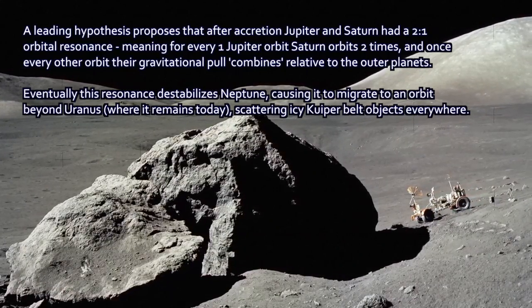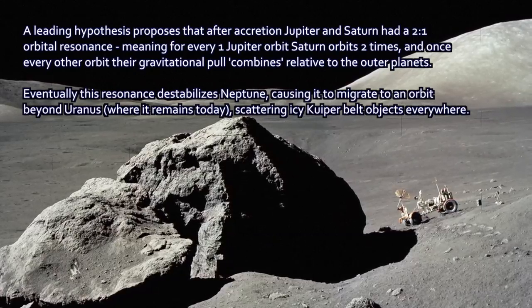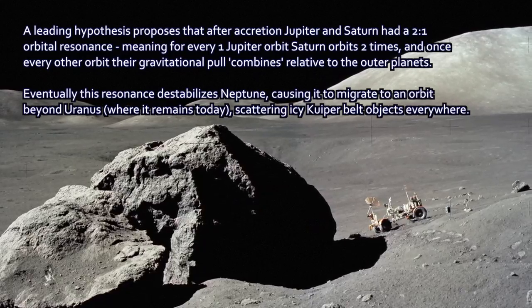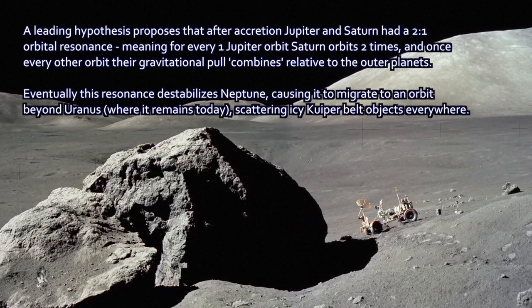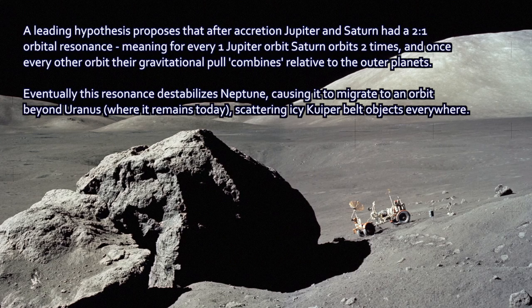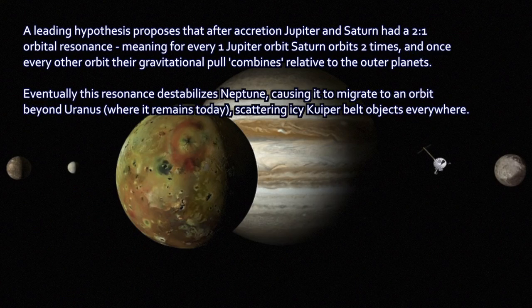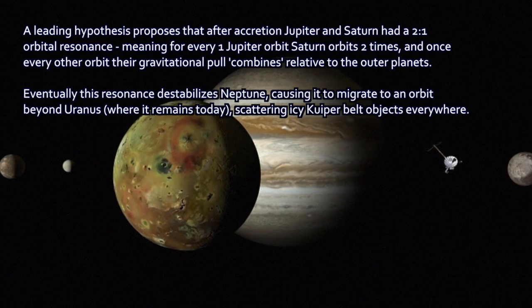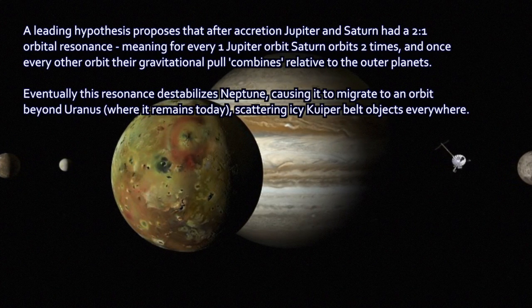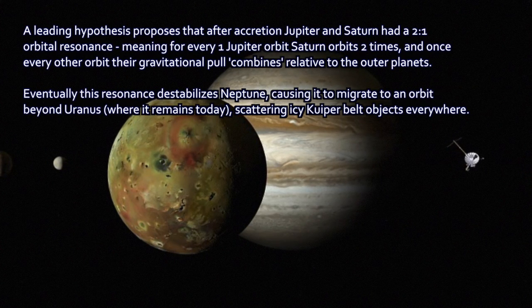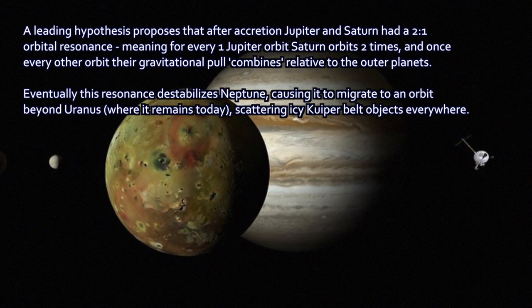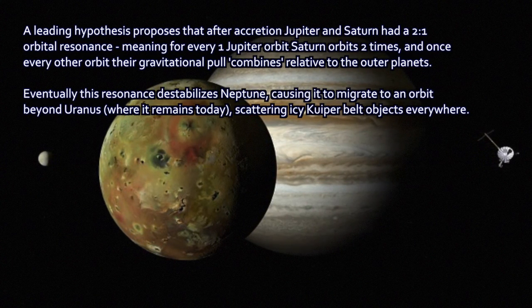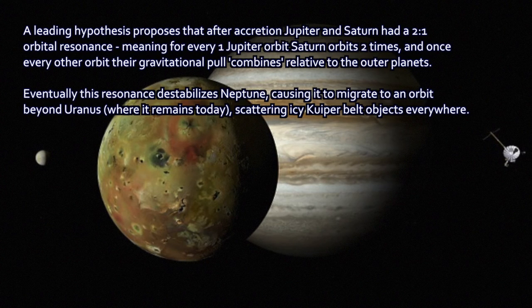Around 4.1 billion years ago, accretion was over, but you don't necessarily get to assume that all the planets are in permanently stable orbits yet. The big outer planets, sometimes the math of how orbits subtly change over time, takes time to play out. It appears that Jupiter and Saturn were in slightly different orbits then than they are now. Jupiter and Saturn then perhaps entered what we call a 2-1 orbital resonance, meaning that for every one Jupiter orbit, Saturn goes around the Sun twice. So every second Saturn orbit, Jupiter and Saturn are on the same side of the Sun.